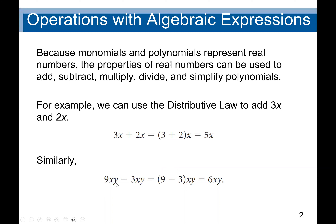Next, we have 9xy minus 3xy. We can see the first term is xy and the second term is xy, so they are like terms. We combine them. Only for addition and subtraction do we combine like terms. So the answer will be 9xy minus 3xy, that is 9 minus 3, which gives us 6xy.